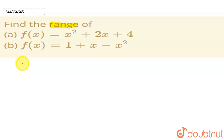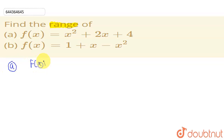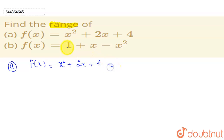In this question we have to find the range for f(x) in part A and part B. So let's start with part A. Our f(x) is equal to x² + 2x + 4.